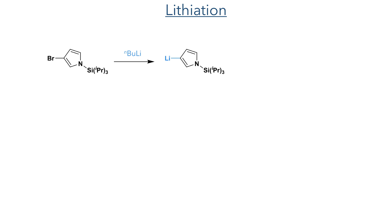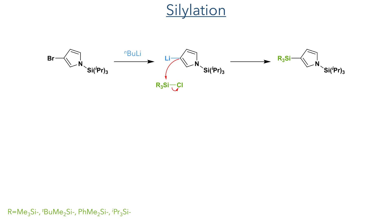Let's start with the synthesis. Reaction of the brominated pyrrole with n-butyllithium forms a nucleophile that was reacted with a range of organosilyl chloride groups. Four different groups were used: trimethylsilyl, tert-butyldimethylsilyl, phenyldimethylsilyl, and triisopropylsilyl. The difference in the reactivity of these molecules will be seen later in the synthesis.